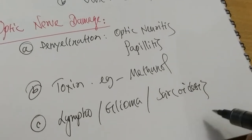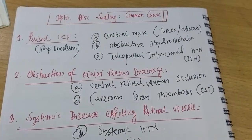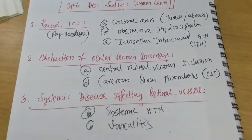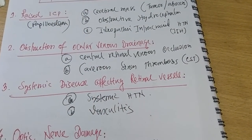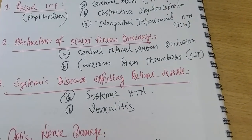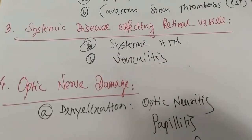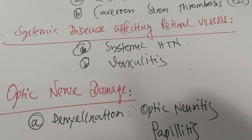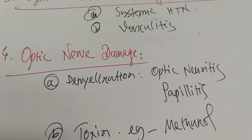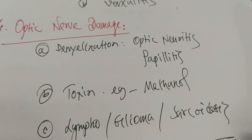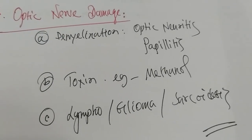So in summary, the four headlines for optic disc swelling are: raised ICP — such as cerebral mass lesion, obstructive hydrocephalus, or IIH; obstruction of ocular venous drainage — such as central retinal vein occlusion or cavernous sinus thrombosis; systemic disease affecting retinal vessels — such as systemic hypertension or vasculitis; and optic nerve damage — due to demyelination such as optic neuritis or papillitis, methanol toxicity, or infiltrative conditions like lymphoma, glaucoma, or sarcoidosis.